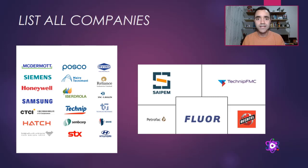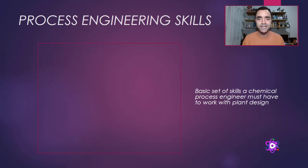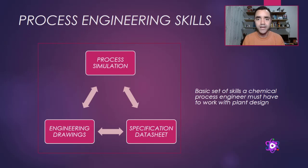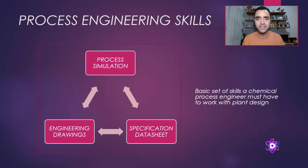That leads to the third step: map the basic skills or the most wanted skills that companies want from a chemical process engineer. When we talk about plant design, the basic set of skills for any company you apply to is process simulation, engineering drawings, and specification data sheets. We need to perform the heat and material balance of complex processes, and the main tool we use for that is process simulation. But the plant is not built with the process simulation alone — we need to develop drawings for many disciplines. For example, for operations and representation of the heat and material balance, we create the process flow diagram.